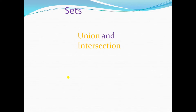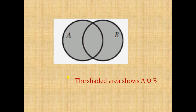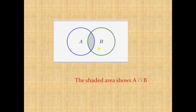Today we are looking at union and intersection of sets. Look at this Venn diagram — we have A and B. The shaded area shows A union B, and the gray shaded area here is showing the intersection.